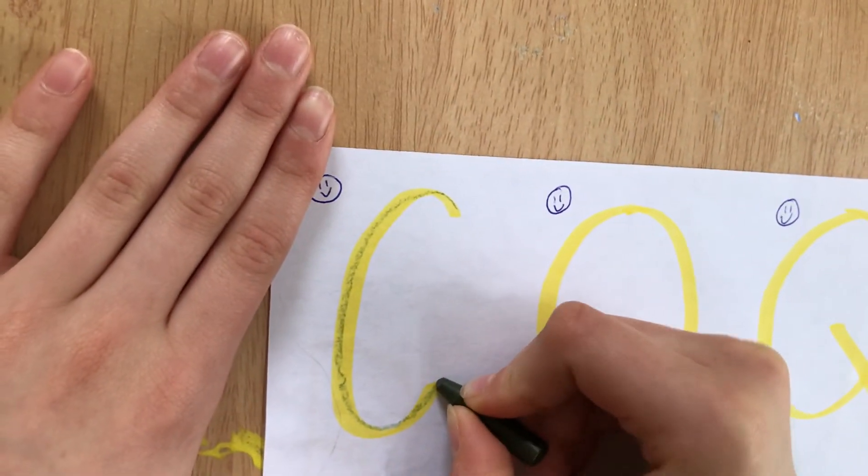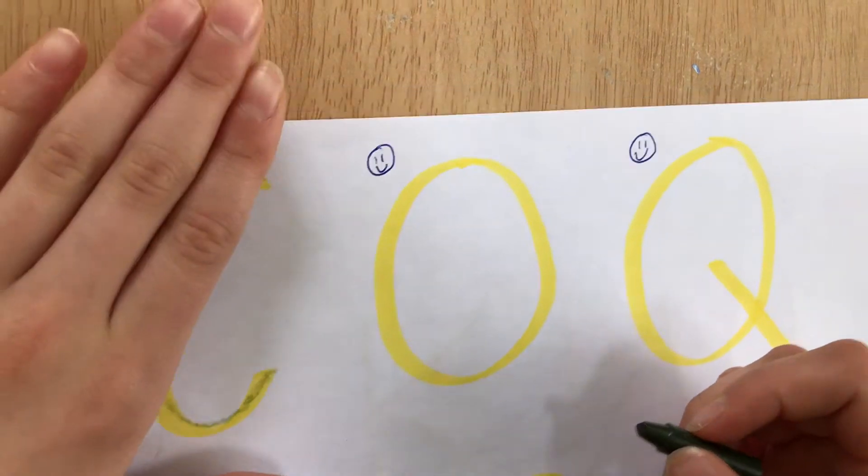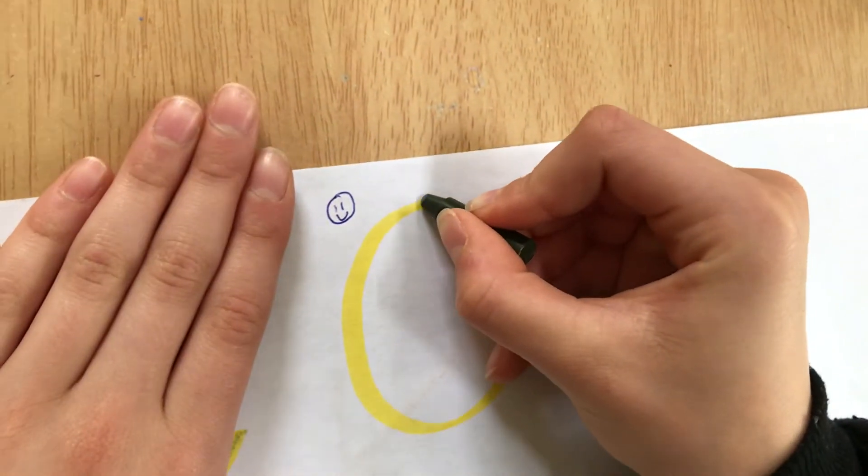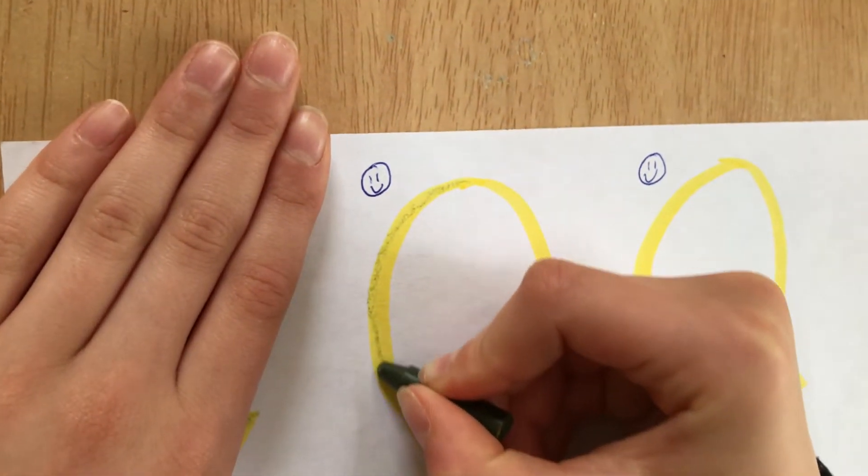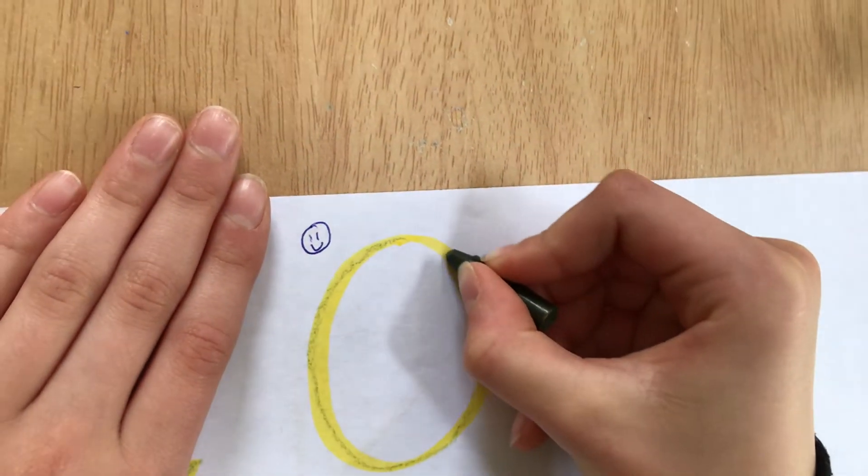Magic C. Let's try O. Magic C towards the smiley face into an O.